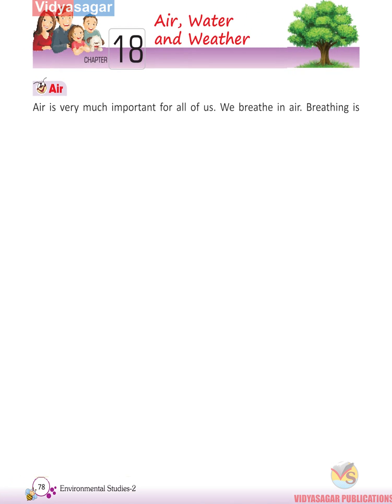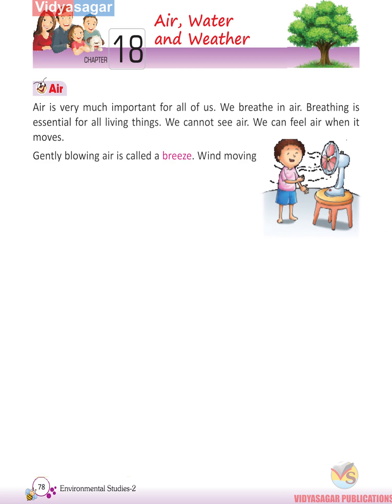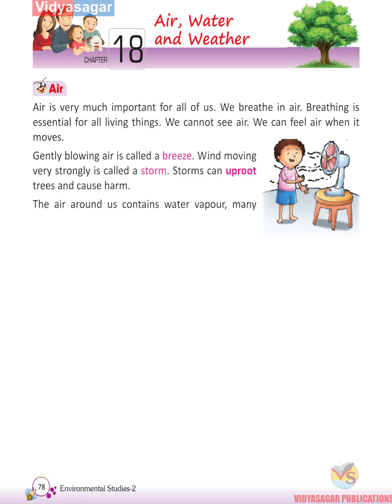Chapter 18: Air, Water and Weather. Air is very important for all of us. We breathe in air, and breathing is essential for all living things. We cannot see air, but we can feel it when it moves. Gently blowing air is called a breeze. Wind moving very strongly is called a storm. Storms can uproot trees and cause harm. The air around us contains water vapor, many different gases and dust particles.